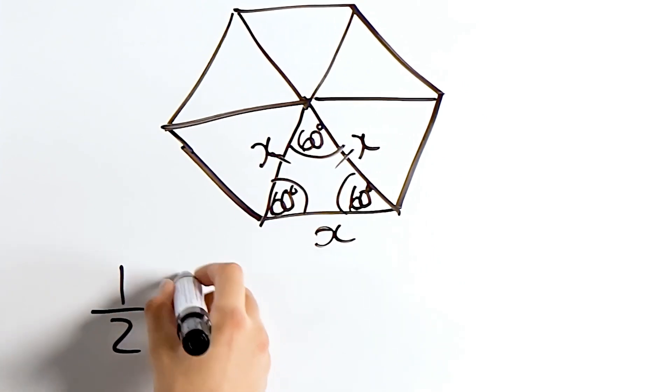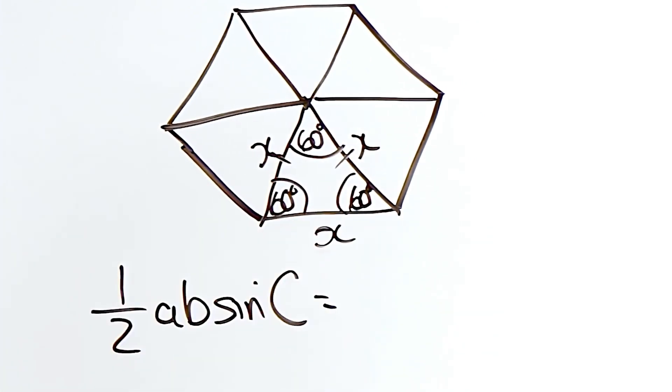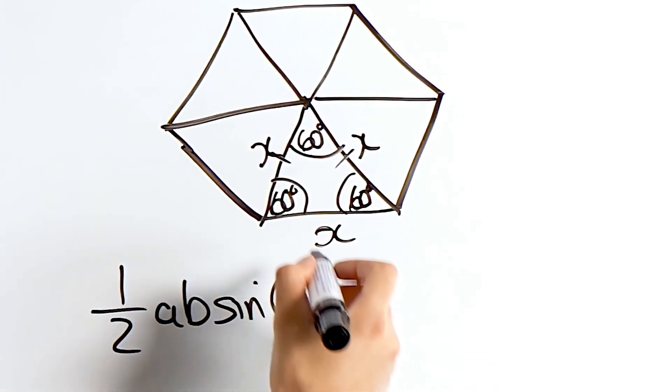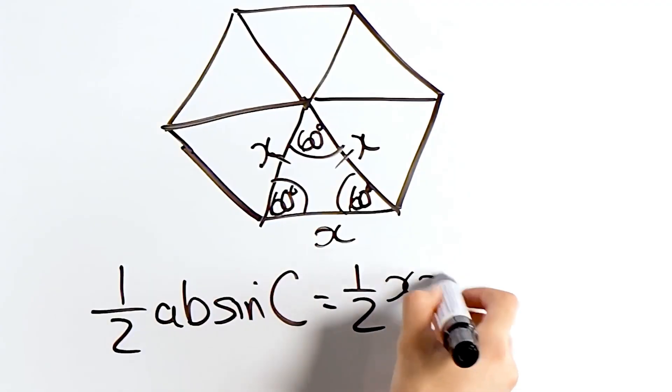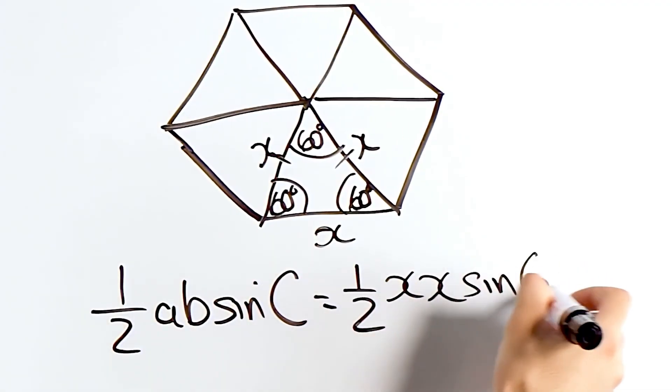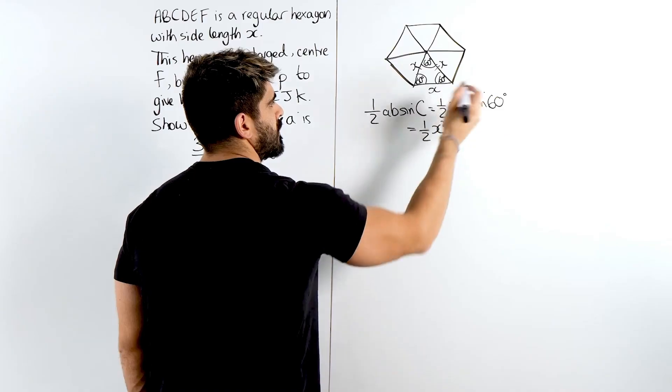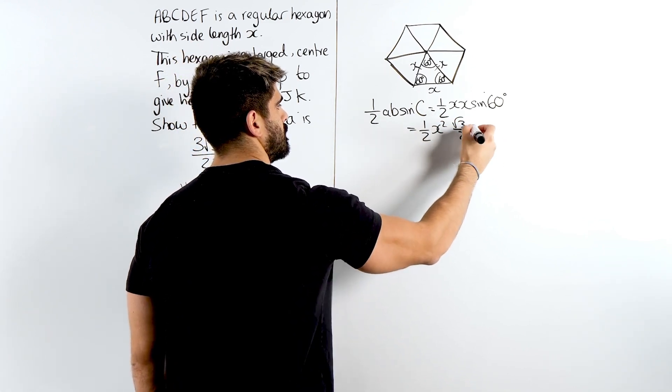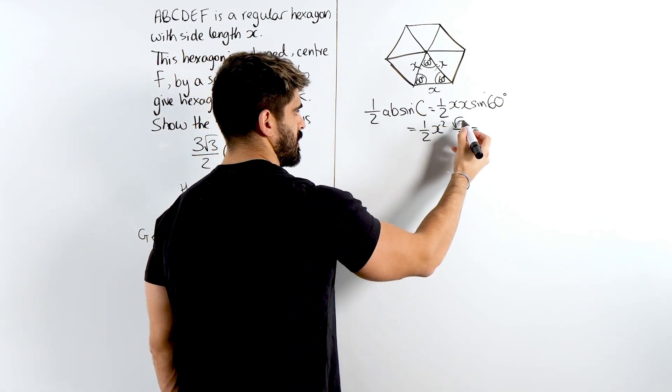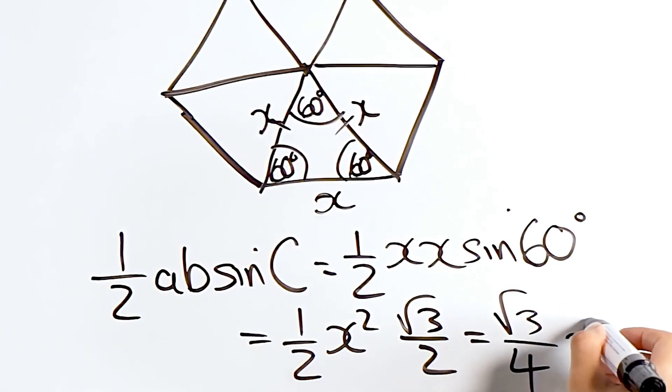So half AB sine C is the area of a non-right-angled triangle. So we're going to have a half. It doesn't matter which way you look at it. AB, so X times X, sine of the angle 60 degrees. Now you guys need to know, X times X is X squared. Sine of 60 is root 3 over 2. So we're left with root 3 over 4, so root 3 times 1, root 3 over 2 times 2 is 4, X squared.